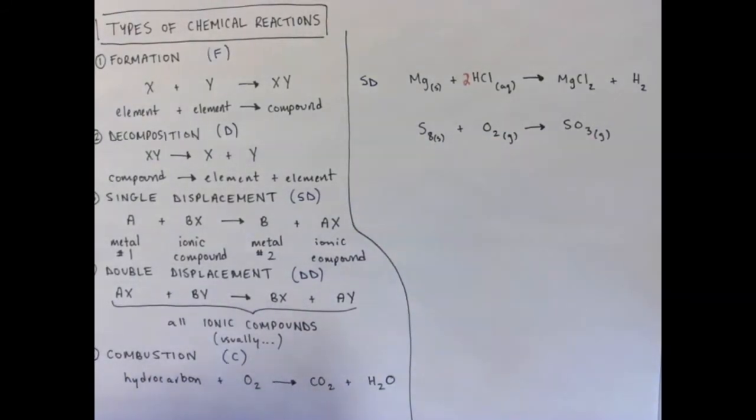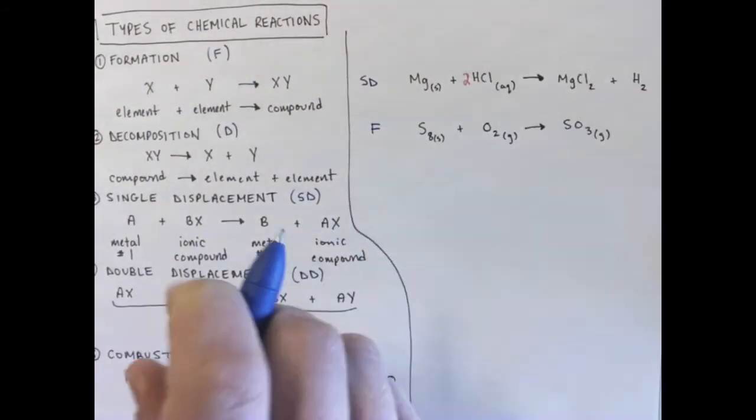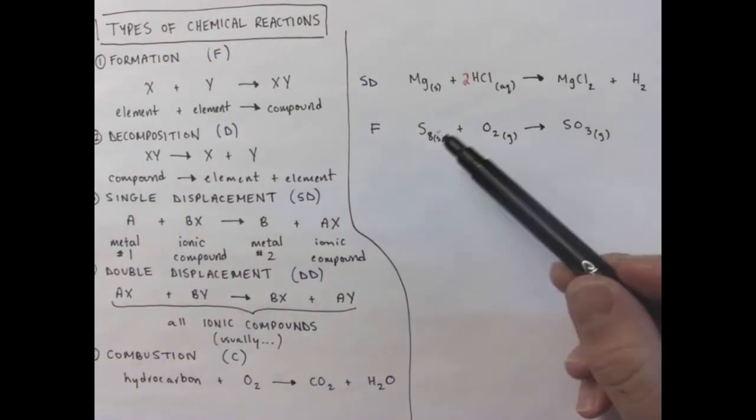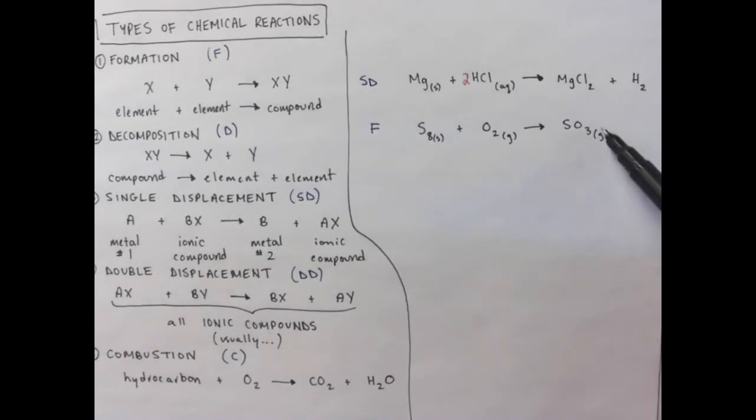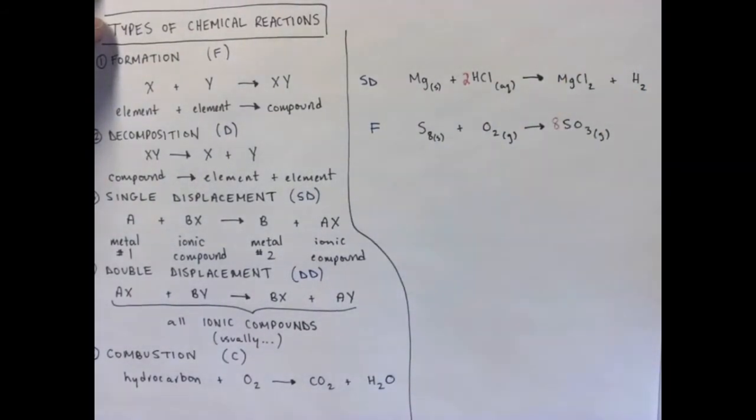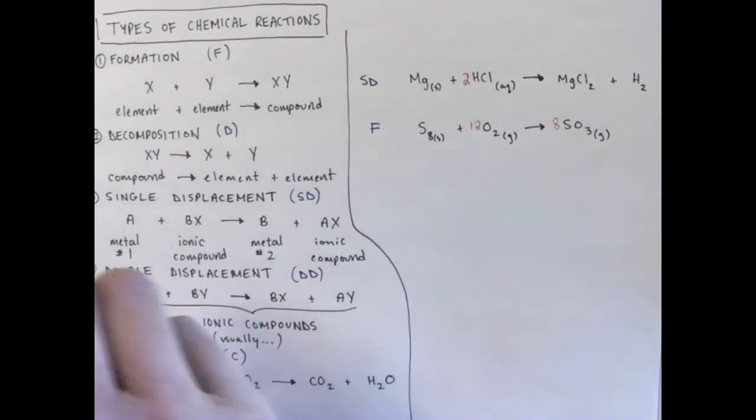So I am going to put an F down there. And I did kind of skip ahead and say this made sulfur trioxide. I wasn't expecting you to figure out which oxide of sulfur it made. It could have made sulfur dioxide. I'm not asking you to predict whether it's sulfur trioxide or sulfur dioxide. What do I need to do to balance this? I think I need to put an 8 here. And what else do I need to do? I think I need to put a 12 there. So that's a formation reaction.